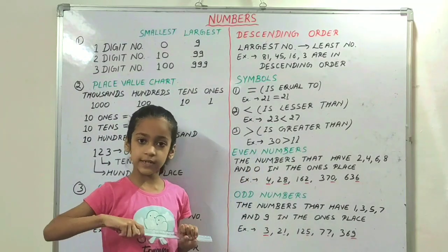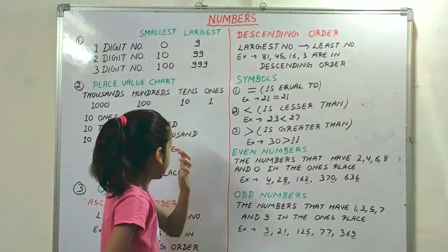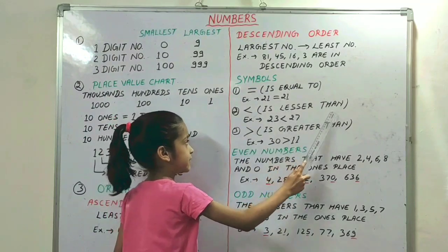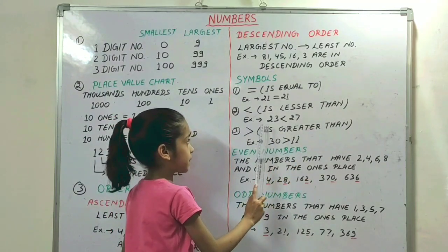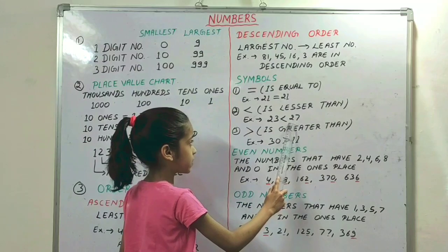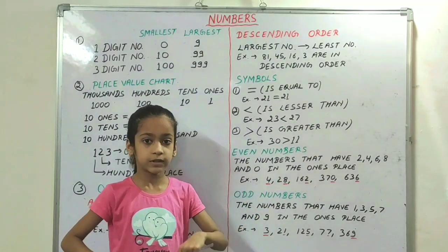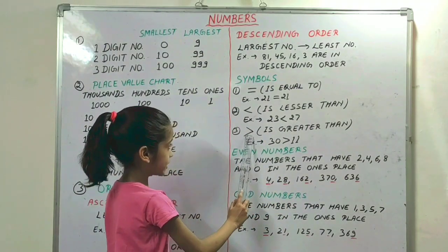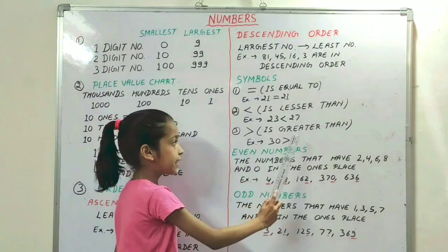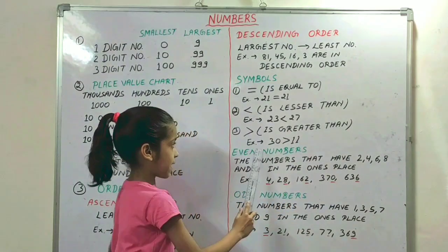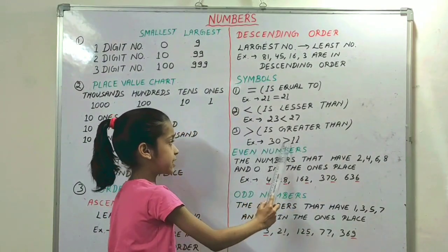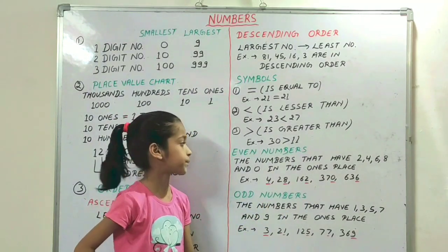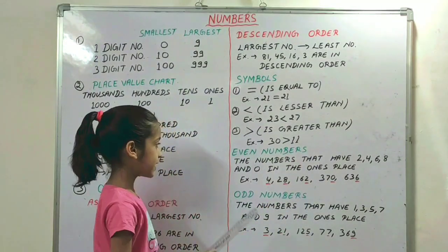So we put this symbol for equal. Our next symbol means lesser than, and for example 23 is lesser than 27, so we put this symbol. Our next symbol means greater than. Example: 30 is greater than 11, so we put this symbol.